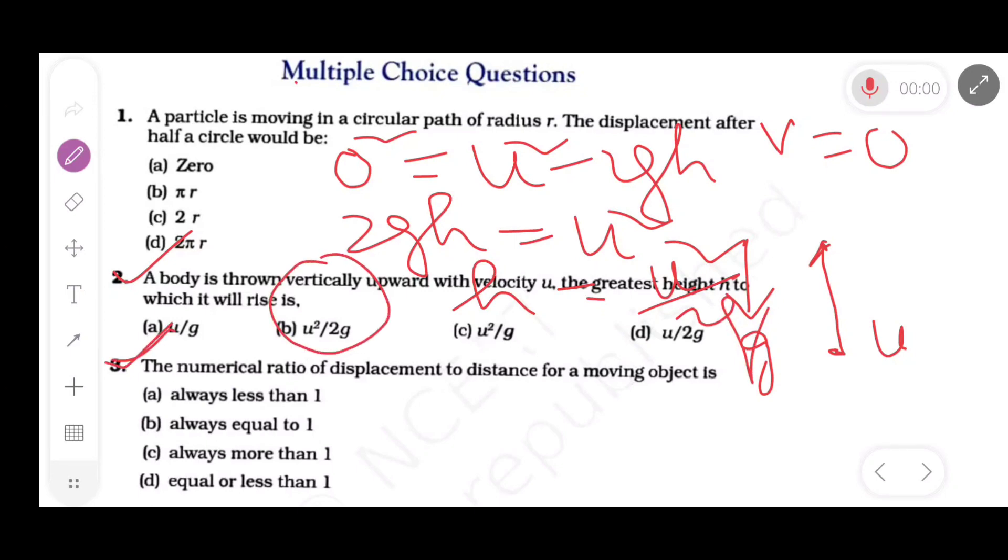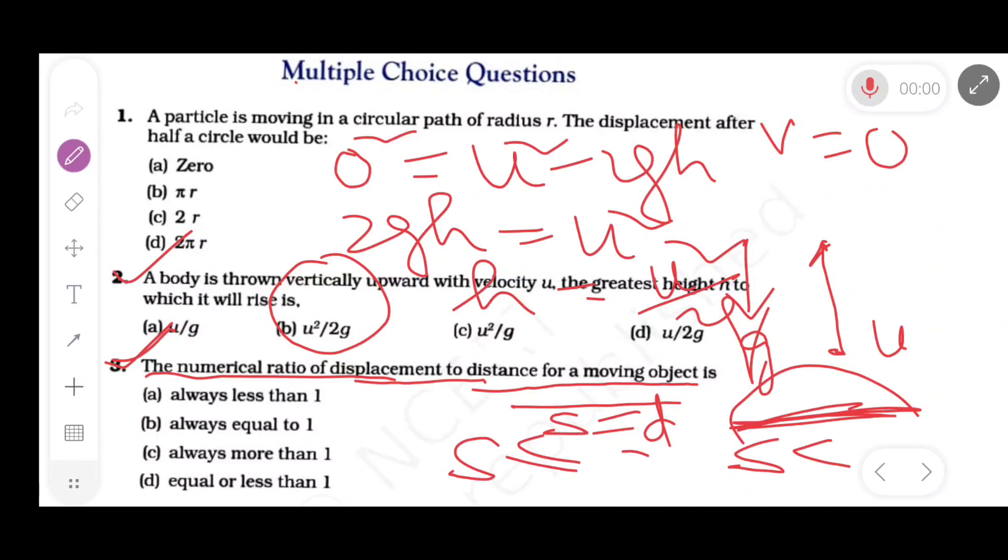Now MCQ 3. The numerical ratio of displacement and distance for a moving object. For straight line path, displacement equals distance. For a curved path, displacement, the shortest distance, is less than the path length. Therefore s ≤ distance. So option D is correct: equal or less than 1.